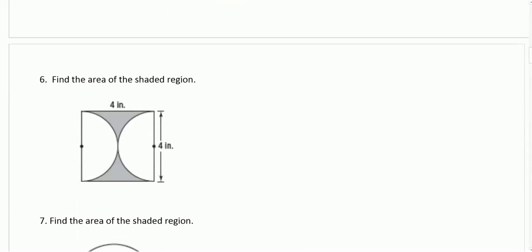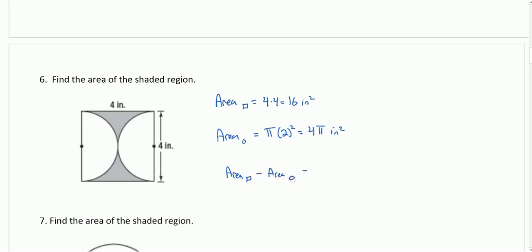Number 6, we have a square 4 by 4. The area of that square is 4 times 4, which is 16 square inches. And then we have 2 semi-circles that make a full circle. The area of that full circle is pi r squared. r is half the diameter; diameter is 4, so pi times 2 squared, or 4 pi square inches. The shaded area is the area of the square minus the area of the circle, so 16 minus 4 pi square inches.